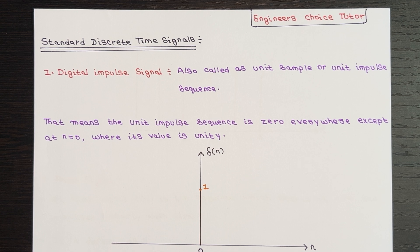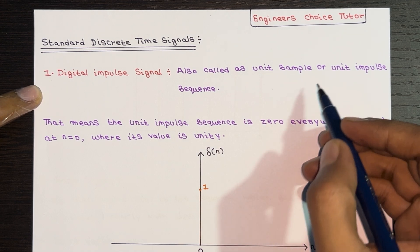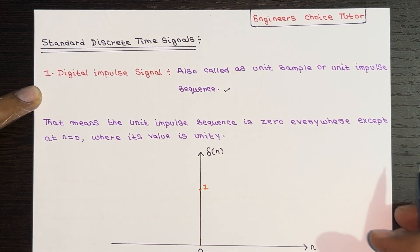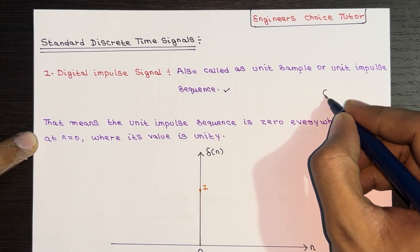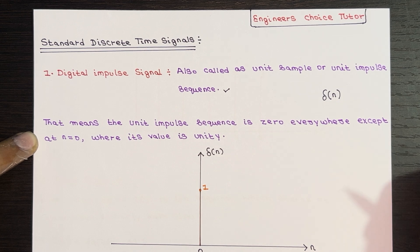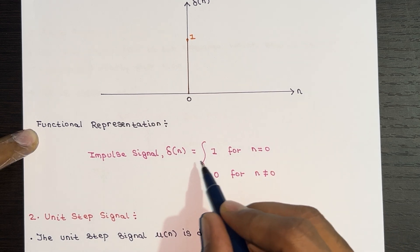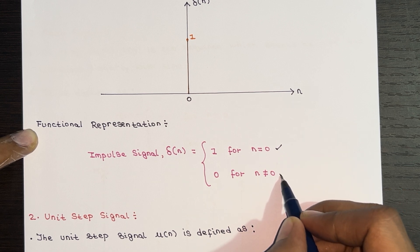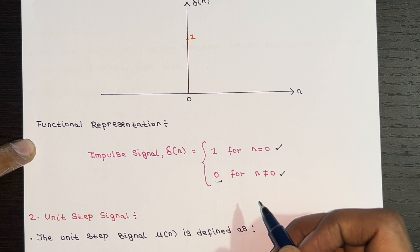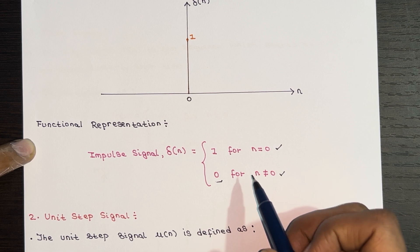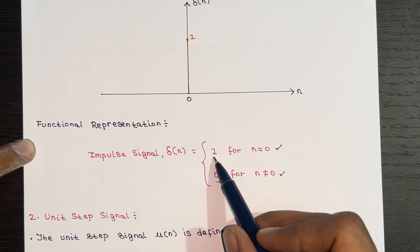Let's talk about the discrete impulse signal, also known as the unit impulse sequence. The discrete time unit impulse sequence, denoted as δ(n), is defined as follows: for n equal to zero, δ(n) is equal to one, and for n not equal to zero, δ(n) is equal to zero. In simpler terms, the unit sample sequence is a signal that has a value of zero everywhere except at n equal to zero, where it has a value of one.